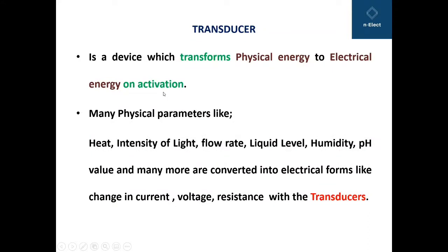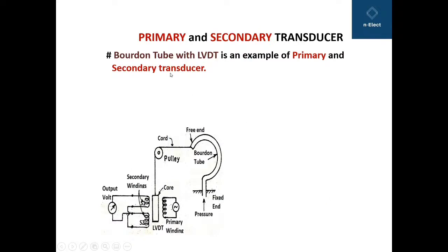There are many physical quantities or parameters like heat, intensity of light, flow rate, liquid level, humidity, pH value and many more, which can be converted into electrical forms like change in current, change in voltage, or change in resistance with the help of transducers. As an example of primary and secondary transducers,